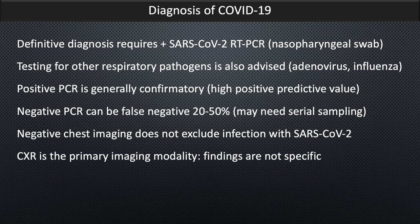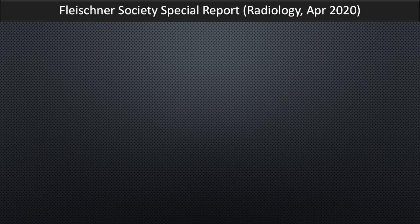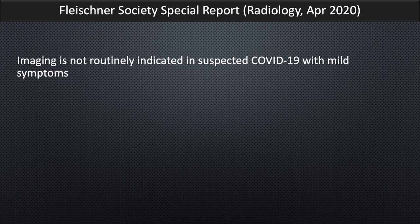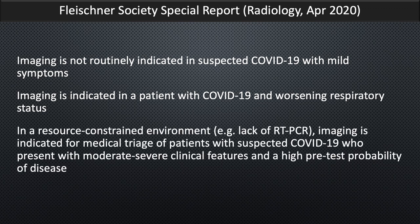Chest radiograph is the primary imaging modality, though findings are not specific. CT is reserved for complex situations and problem solving, including to assess differential diagnosis, contributory factors, and reasons to explain clinical deterioration. The Fleischner Society published a special report in Radiology in April 2020 in which they suggest that imaging is not routinely indicated in suspected COVID-19 with mild symptoms. However, imaging is indicated in a patient with COVID-19 and worsening respiratory status. Finally, they conclude that in a resource-constrained environment, for example if there is lack of PCR testing capability, imaging is indicated for medical triage of patients with suspected COVID-19 who present with moderate or severe clinical features and a high pre-test probability of this disease.